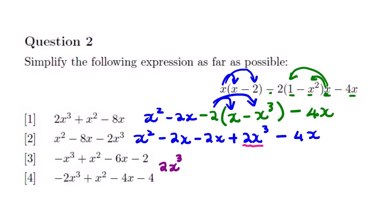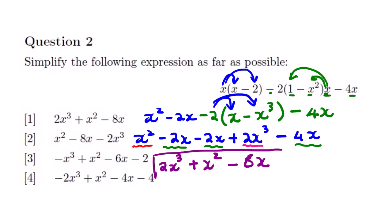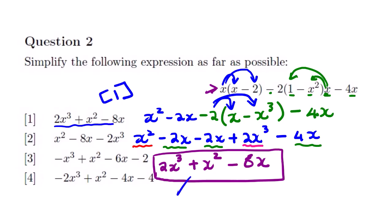Looking at terms with x raised to the power 2, we only have one, so we rewrite it as x squared. Then looking at terms with x raised to the power 1, we have three of them: negative 2x minus 2x is negative 4x, and then minus 4x gives us negative 8x. So the simplified expression is 2x to the power 3, plus x squared, minus 8x. We can see that the correct option matches what we got.